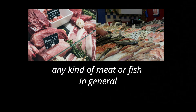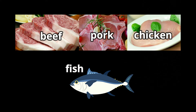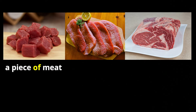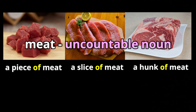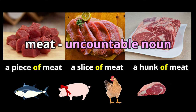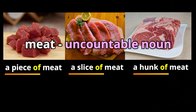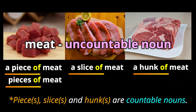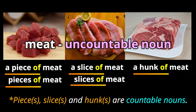If we want to count any kind of meat or fish — for example beef, pork, chicken, or fish — we can count it by saying a piece of meat, a piece of pork, or whatever. A slice of meat or a hunk of meat. You can substitute 'meat' for whichever one you want. The measure word 'piece' is countable, so we can say pieces of meat, or a slice of meat, or slices of meat. We can even use 'hunk' — a hunk of meat or hunks of meat.